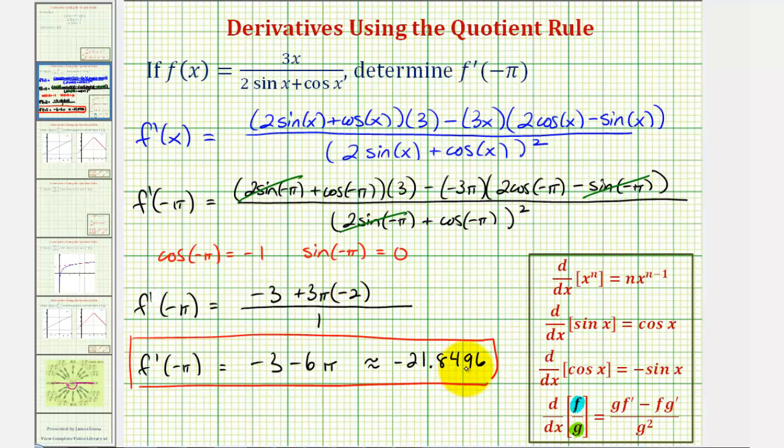This would also be the slope of the tangent line at x equals negative pi radians. I hope you found this helpful.